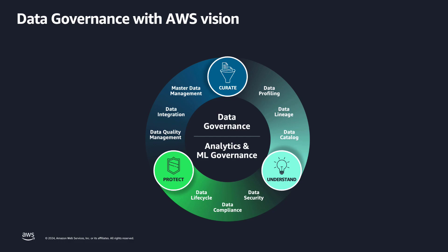This is data governance with AWS Vision. It has three main pillars: curate, protect, and understand. We are going to base today's session on the understand pillar, specifically the data catalog component.